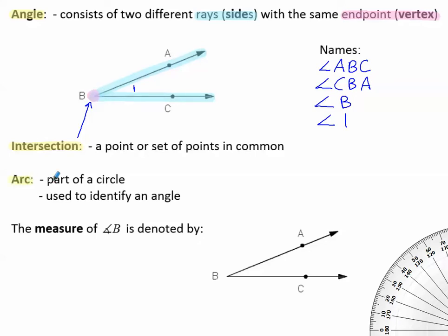An arc is a part of a circle. It is used to identify an angle. So in this picture, I could draw an arc to show that I am referring to this angle right here. This is a part of a circle. This is an arc to reference this angle.